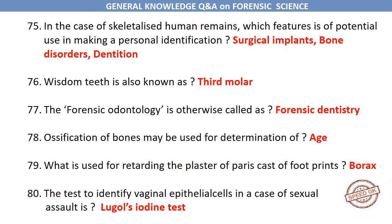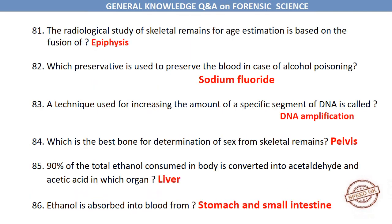Ossification of bones may be used for determination of age. What is used for retarding the plaster of Paris cast of footprints? Borax. The test to identify vaginal epithelial cells in a case of sexual assault is Lugol's iodine test. The radiological study of skeletal remains for age estimation is based on the fusion of epiphysis. Which preservative is used to preserve blood in case of alcohol poisoning? Sodium fluoride.